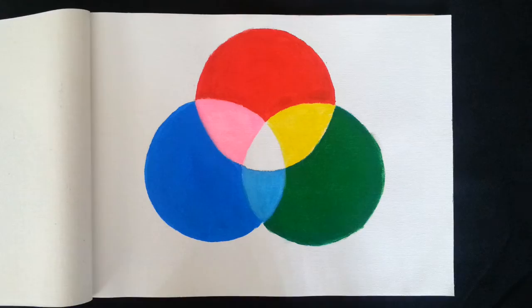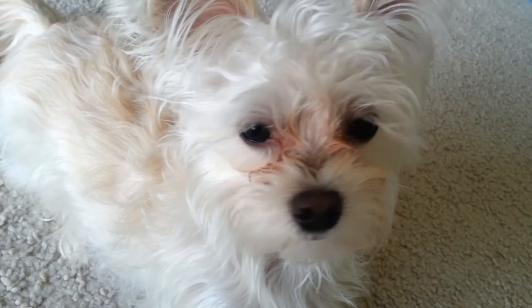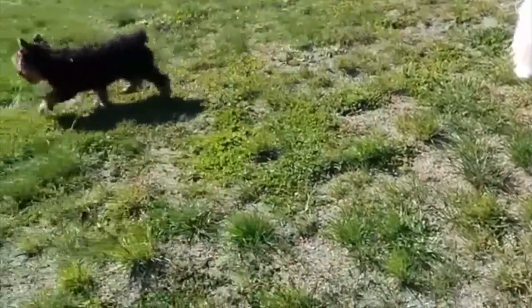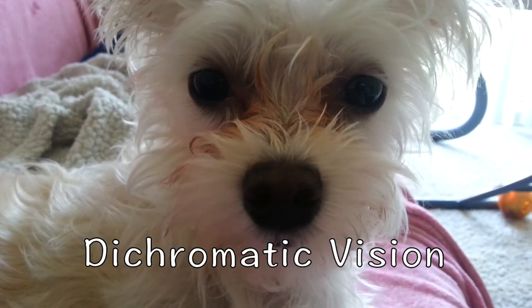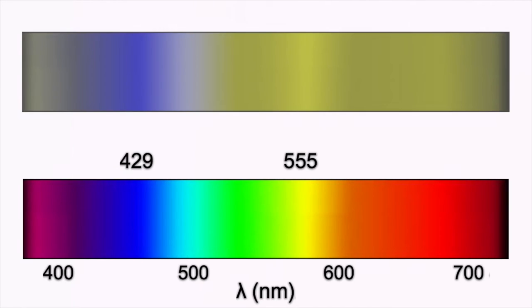We humans see more or less the same colors, but how does it differ between different species? Dogs are a great example to demonstrate these differences. It has been an old myth that dogs can only see in black and white, but it turns out they can perceive color, just differently than we do. A series of color discrimination experiments led by Jay Neitz from the University of California in 1989 concluded that dogs have dichromatic color vision. In other words, while normal humans have three types of cones, dogs only have two. Their cones are only able to pick up wavelengths that are around 429 nanometers and 555 nanometers, which corresponds to blue and yellow colors, respectively.